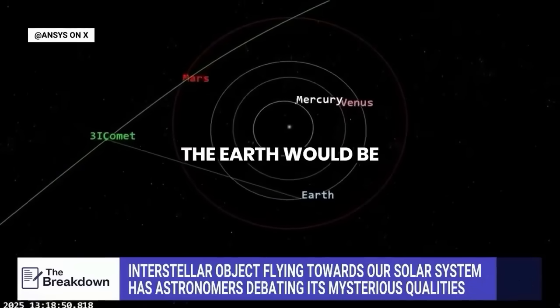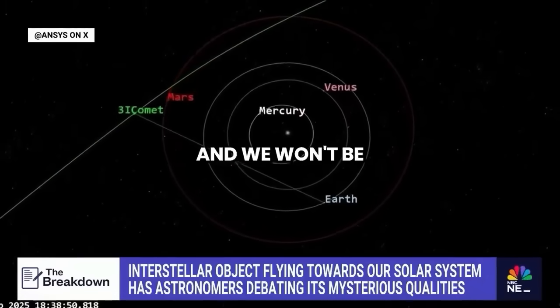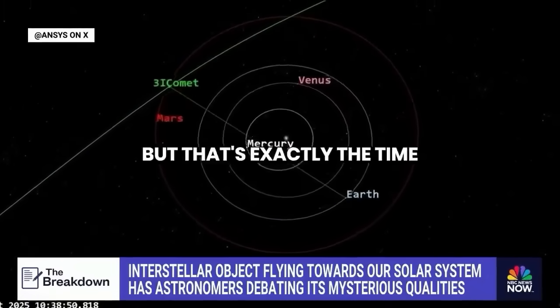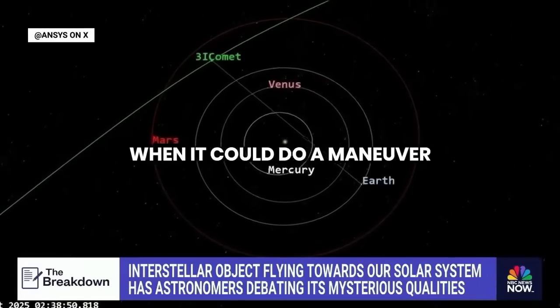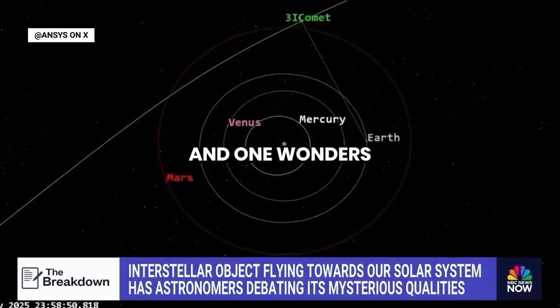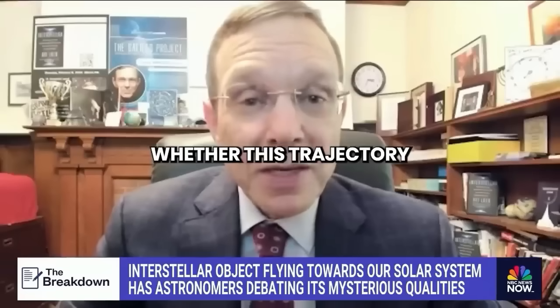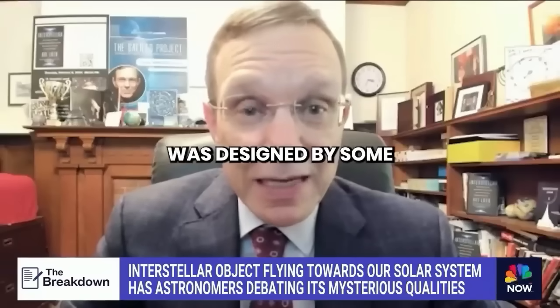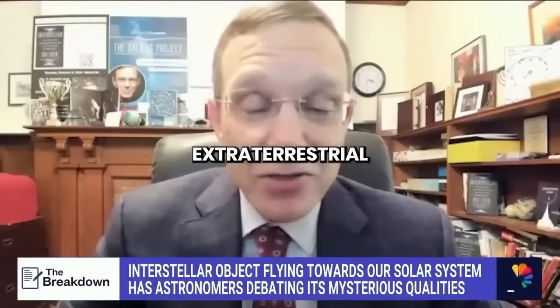When it arrives closest to the sun, the Earth would be on the opposite side, and we won't be able to observe it. But that's exactly the time when it could do a maneuver to slow down and visit us. And one wonders whether this trajectory was designed by some extraterrestrial intelligence.